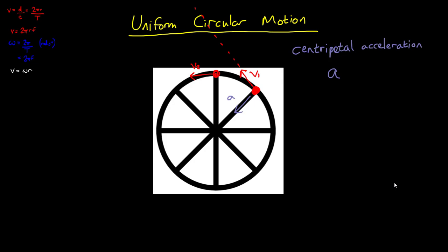We can calculate centripetal acceleration with the equation a equals v squared divided by r. And since we know that v equals omega r, we can write this in terms of omega as a equals omega squared multiplied by r.